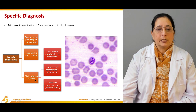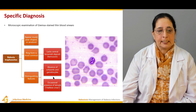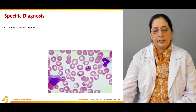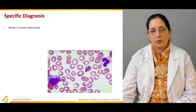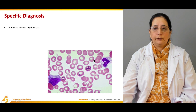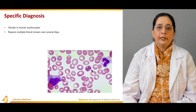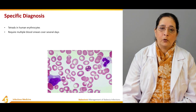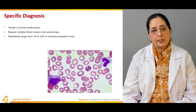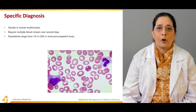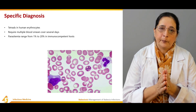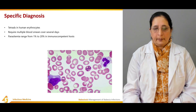Distinguishing features of Babesia trophozoites are the absence of schizonts and gametocytes, and the occasional presence of tetrads in human erythrocytes. Multiple blood smears over several days may be required. Parasitemia ranges from 1% to 20% in immunocompetent hosts, and high parasitemia is a very poor prognostic factor that can lead to death in severe illness.